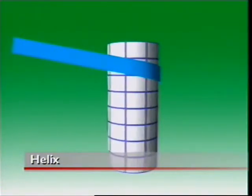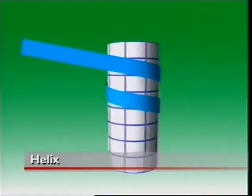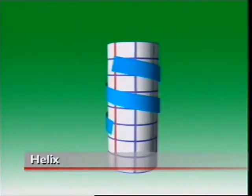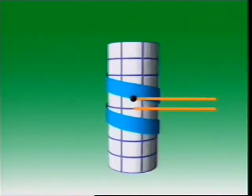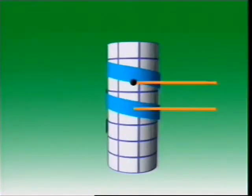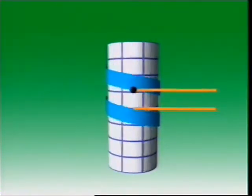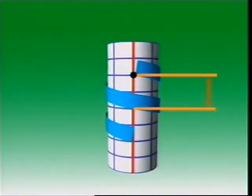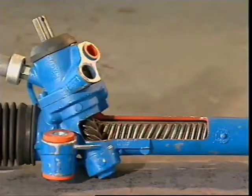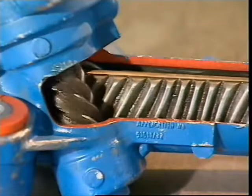If an inclined plane is wrapped around a cylinder, the edge of the plane forms a shape called a helix. Rotation of the cylinder causes a point on the helix to move along the surface of the cylinder. The distance the point moves in one revolution of the cylinder is called the pitch. The helix shape is commonly used as a thread on nuts and bolts and also for teeth in steering gears and transmissions.